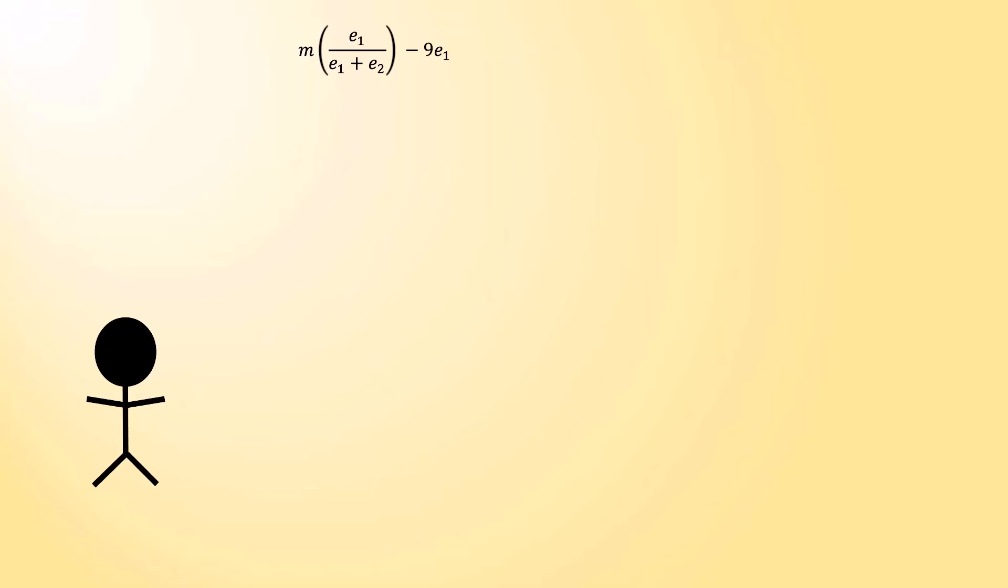It turns out that this optimization problem is easier to work through than the previous one. That's because you implicitly control the amount of effort your opponent produces. Remember, their optimal effort level is 250 times the square root of your effort, minus your effort. And if we do a little bit of simplifying, that works out to be just 4000 times the square root of your effort, minus 9 times your effort.